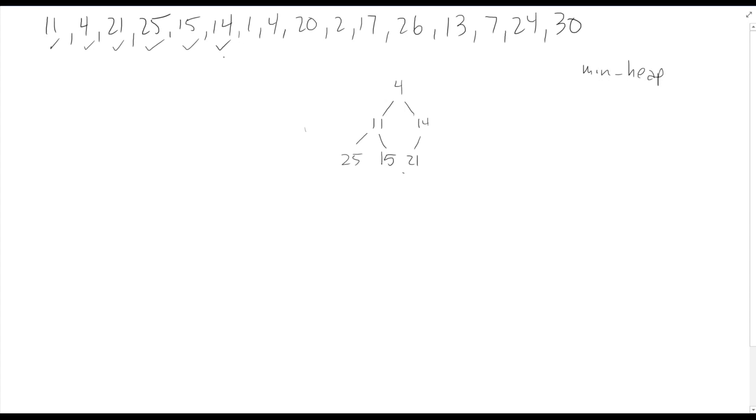Now we get to this point here. We do have an invariant violation. Our 14 is less than our 21, so we need to perform a swap operation here. And after that swap, our 14 has settled into the proper location as it is still greater than the 4, so it doesn't need to shuffle up any further.